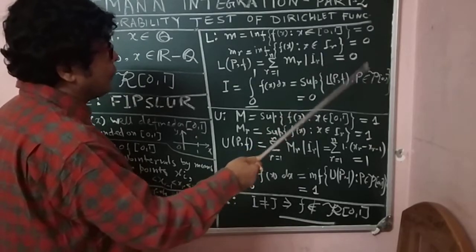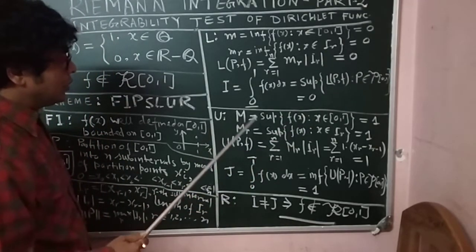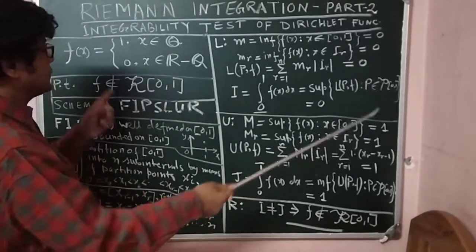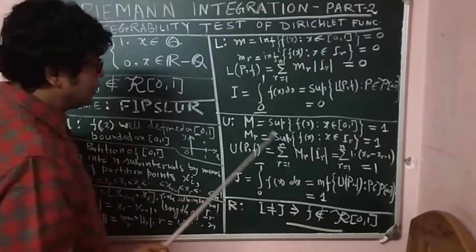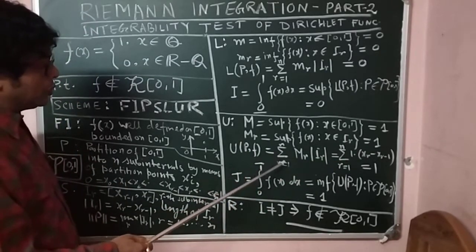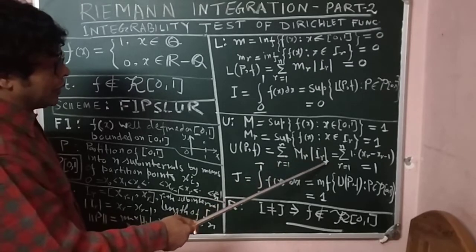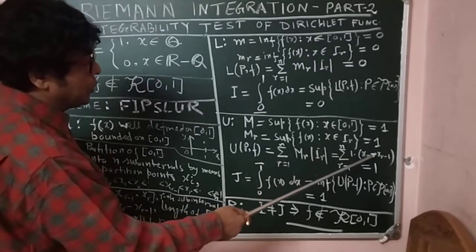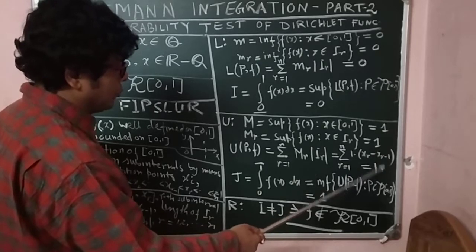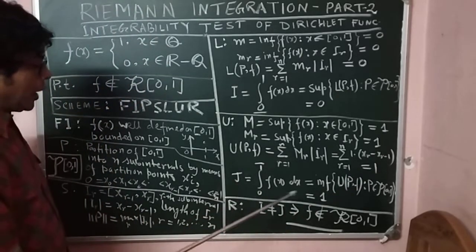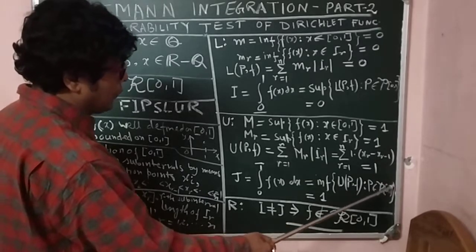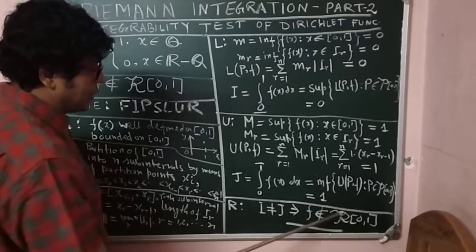What is U? Since every sub-interval contains both rational and irrational points, the supremum value M_r = 1 for all r. The upper sum U(P, f) equals the sum from r = 1 to n of M_r times |I_r| = sum from r = 1 to n of 1 times (x_r - x_{r-1}), which telescopes to x_n - x_0 = 1 - 0 = 1. Therefore the upper integral J equals the infimum of U(P, f) over all partitions of [0,1], which equals 1.